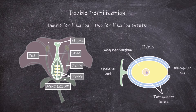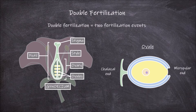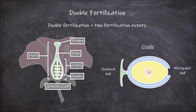Inside the ovule there is originally a single cell known as the megasporocyte, or as the megaspore mother cell. This megasporocyte undergoes the process of meiosis to produce four haploid megaspores. One of these is larger than the other three, and only this larger one survives.